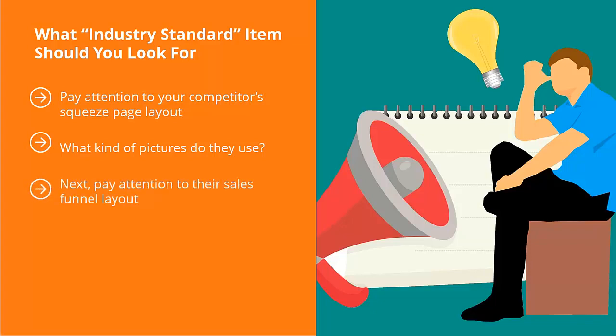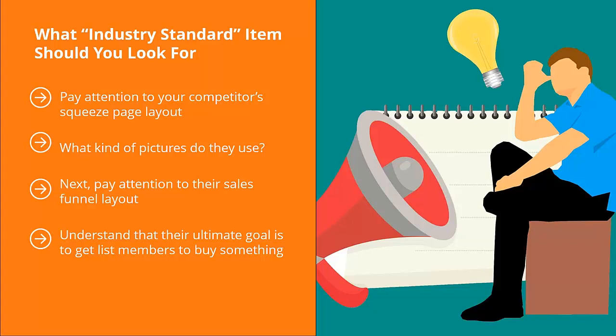Next, pay attention to their sales funnel layout. Your competitors have a standard way of getting people to sign up to their mailing list and also selling those list members a wide range of products and services. Be aware of how they do this and how they take prospects through the sales process. Their ultimate goal is to get list members to buy something, so try to figure out how their sales funnel is laid out and how it seeks to convert list members.